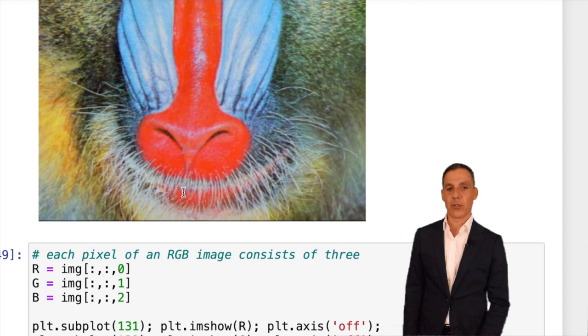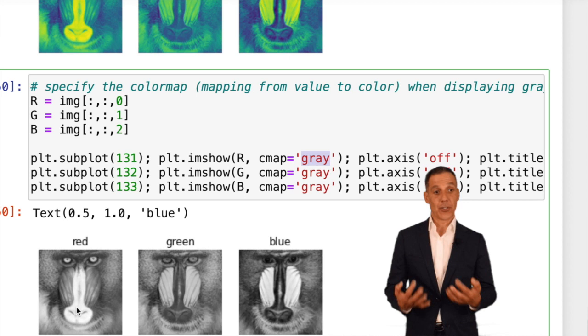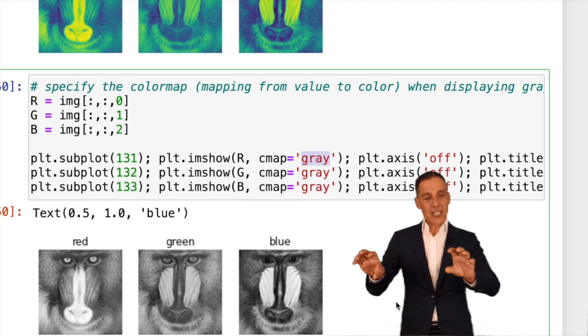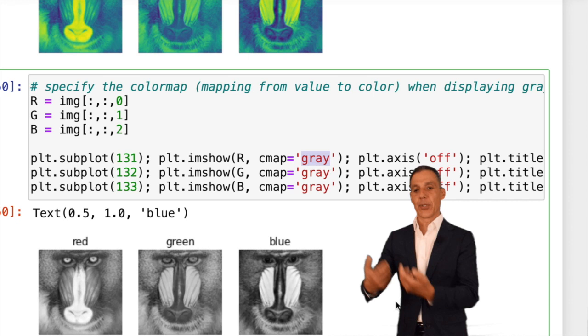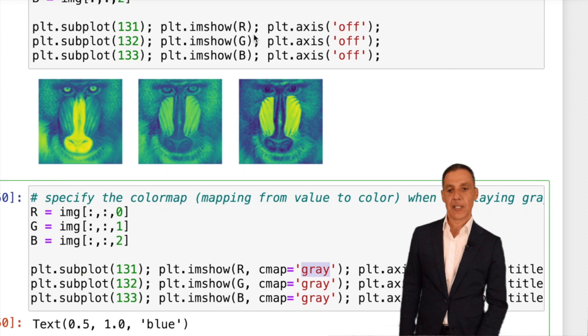Notice in the full image that the nose is red and the side here is blue. Notice in the red channel, there's a lot of red here. Whiteness means there's a lot of value. Darkness means there's not a lot. For the blue channel, there's not a lot of blue in the nose, but there's a lot of blue here. The way to read these channels is when there's a bright value, it means there's a lot of that color, blue, green, or red. When it's dark, it means there's not.